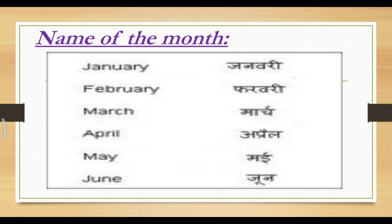What is different in this page? April. April alone. May. Okay. Again we can see: January, February, March, April, May, June.